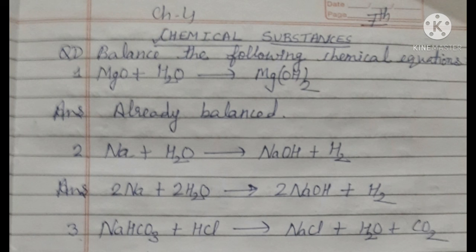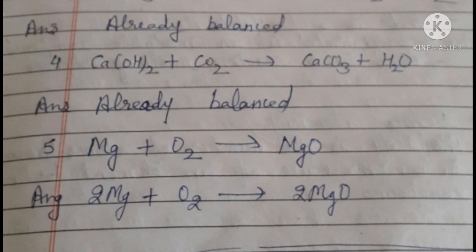The balanced equation is: 2Na + 2H2O → 2NaOH + H2. The third equation: NaHCO3 reacts with HCl (hydrochloric acid) to produce NaCl (sodium chloride) plus H2O plus CO2. Checking the number of atoms of each element on the reactant and product sides, this equation is already balanced.